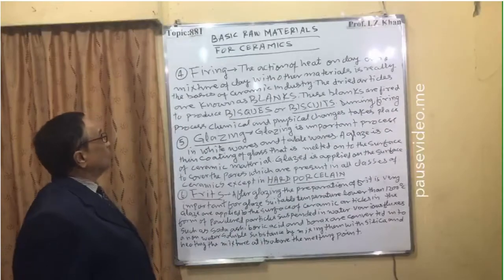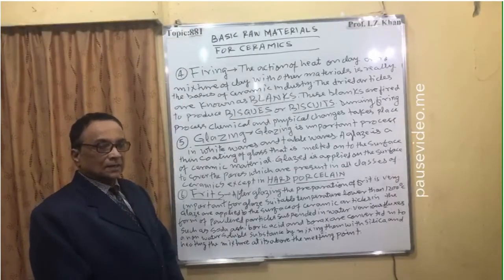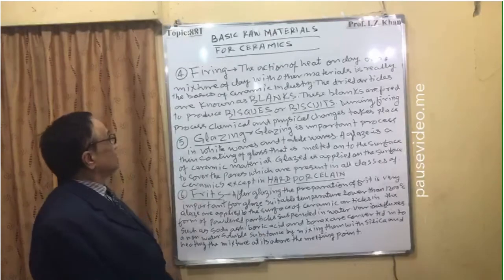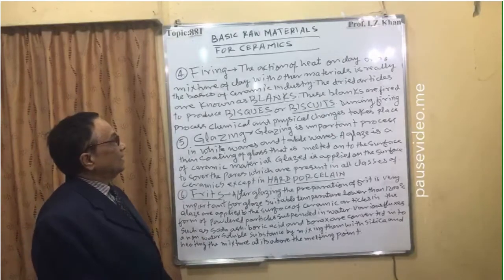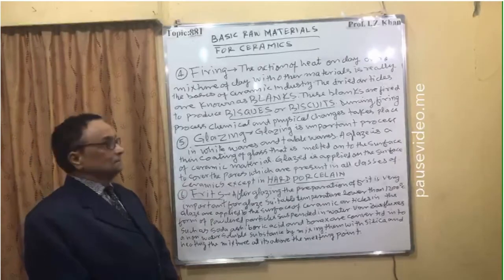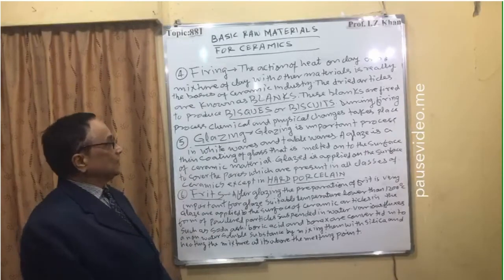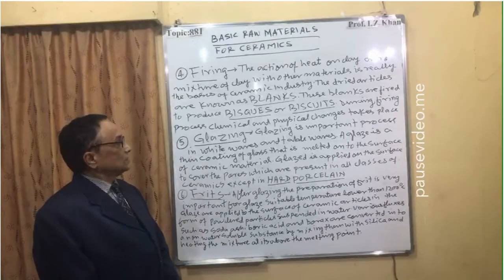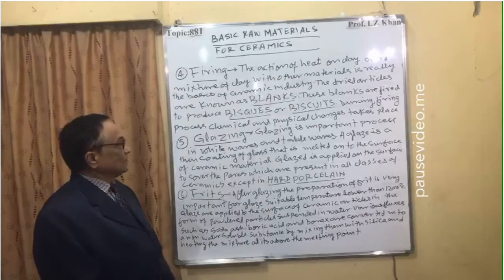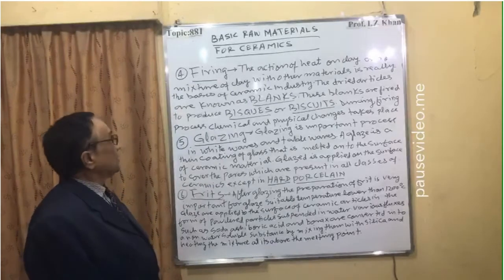After drying, the articles go through firing. The action of heat on clay and the mixture of clay with other materials is the basis of the ceramic industry. The dried articles are known as blanks, and these blanks are fired to produce the biscuit. During the firing process, chemical and physical changes take place.